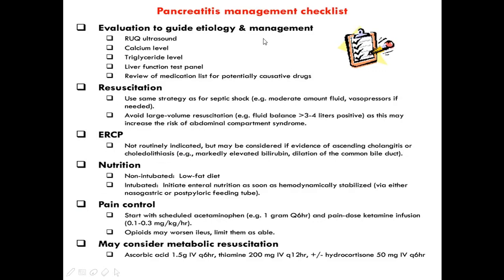This slide shows the pancreatic management checklist. First, evaluation to guide etiology and management: right upper quadrant ultrasound to rule out gallstone, check calcium level, check triglyceride level, check liver function test panel, and review medications for potentially causative drugs. Regarding resuscitation, use the same strategy as for septic shock — moderate amount of fluid, vasopressor if needed. Avoid large volume resuscitation; do not keep fluid balance more than 3 to 4 liters positive, as it may increase the risk of abdominal compartment syndrome.